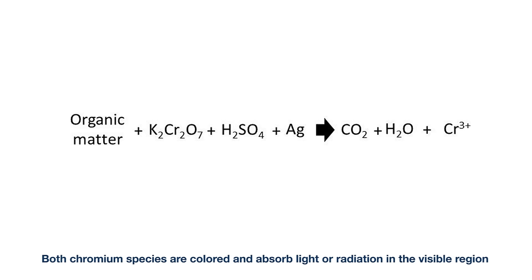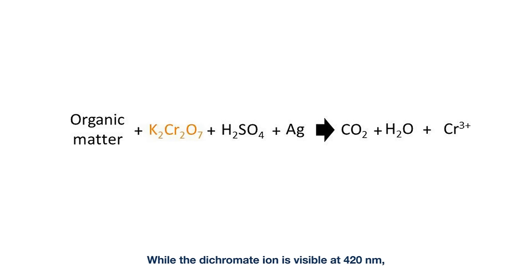Both chromium species are colored and absorb light in the visible region of the spectrum, but at different wavelengths. While the dichromate ion is visible at 420 nanometers, the chromium ion is at 600 to 620 nanometers, where dichromate has nearly zero absorbance.